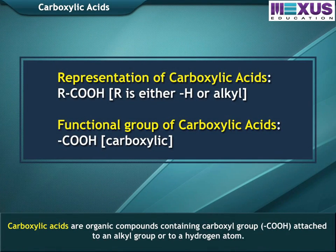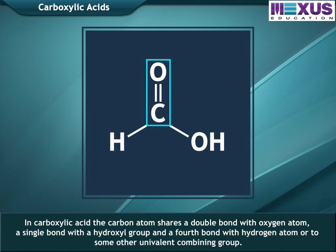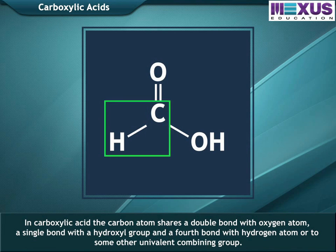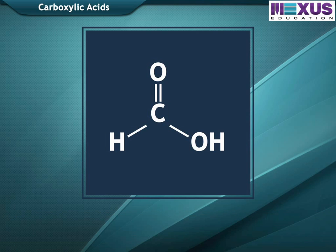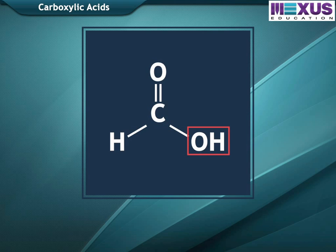Carboxylic acids are organic compounds containing a carboxyl group attached to an alkyl group or to a hydrogen atom. In carboxylic acid, the carbon atom shares a double bond with an oxygen atom, a single bond with a hydroxyl group, and a fourth bond with a hydrogen atom or some other univalent combining group. The carboxyl group is so named because of the carbonyl group and hydroxyl group.